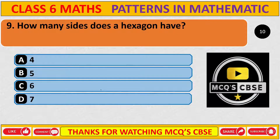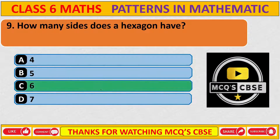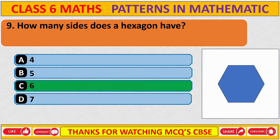How many sides does a hexagon have? The correct answer is C: 6 sides. A figure with 6 sides is called a hexagon, and if all sides are of the same length, we call it a regular hexagon.